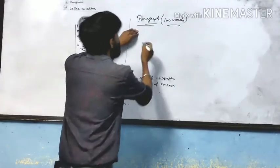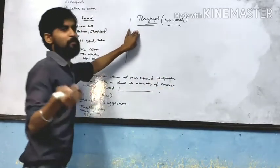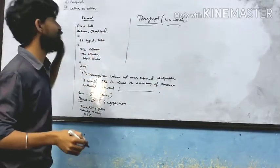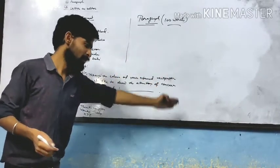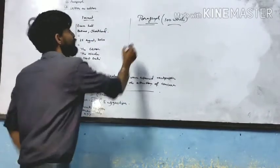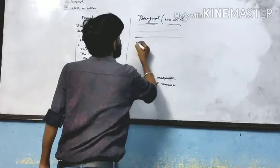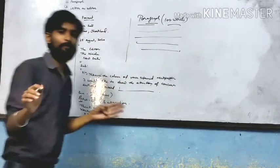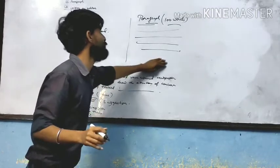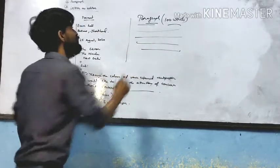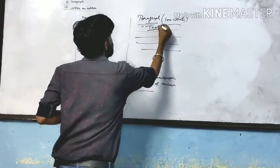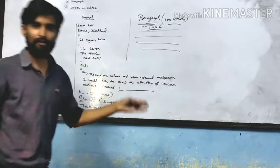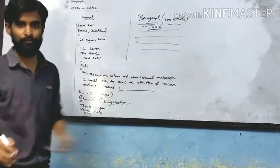A paragraph could be on any topic such as child labour — these are the formal topics for a paragraph. We have to start with the problem, and we conclude everything in a single paragraph. We start from the beginning and end it in a single paragraph without changing paragraphs anywhere. We just write the topic at the front and start writing below it.